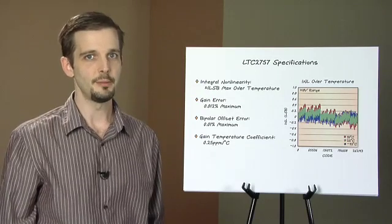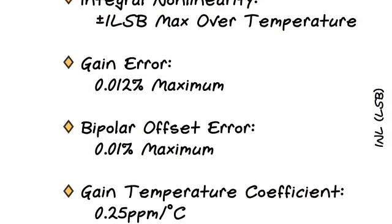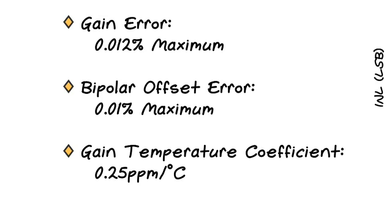Gain error is guaranteed to be better than 0.012% on par with the best references available. Offset in the bipolar ranges is 0.01% and offset in the unipolar ranges is vanishingly small dominated by leakage currents.